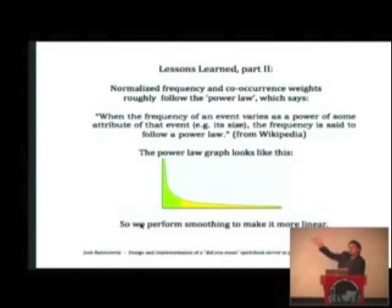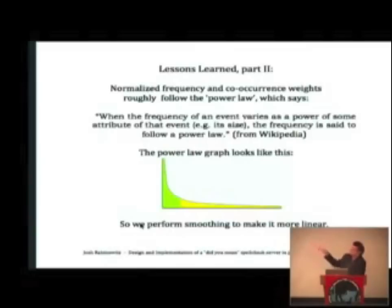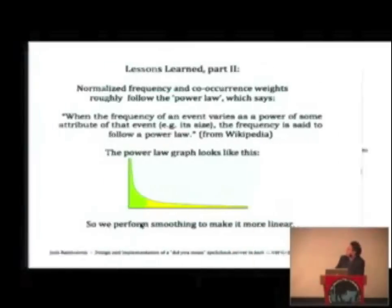Basically, 80% of searches are made up of 20% of the words, so there's a long tail if you graph the frequency of each word. We perform a lot of smoothing to even this out, otherwise the numbers wind up skewed heavily to one side.